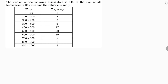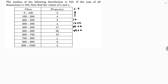To find cumulative frequency: 3, then 3 plus 4 is 7, 7 plus 5 is 12, then 12 plus x, then 12 plus 17 is 29 plus x. Next, 29 plus 20 is 49 plus x, 49 plus 9 is 58, then 68 plus x, then 68 plus x plus y.